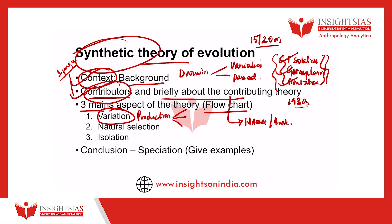You will have to write about mutation, genetic recombination, genetic drift, gene flow, and hybridization. Mutation, genetic recombination, genetic drift, gene flow, and hybridization all add variation within a population. These variations lead to new traits within the species.